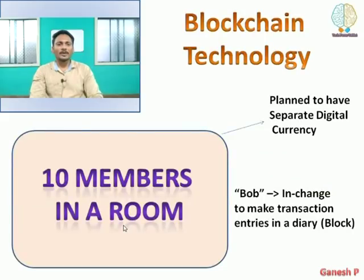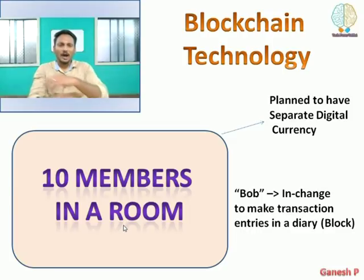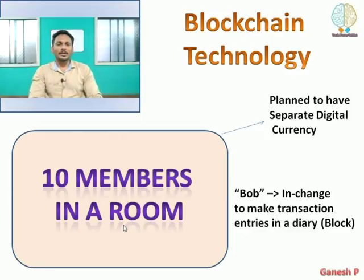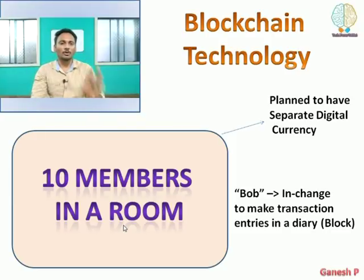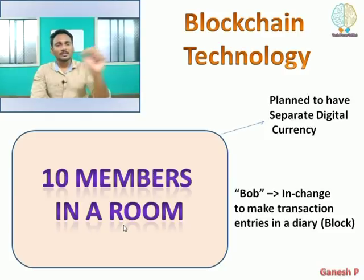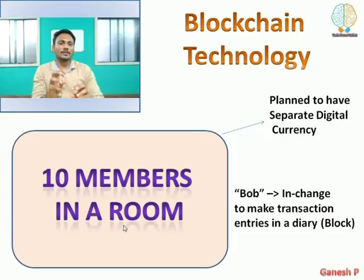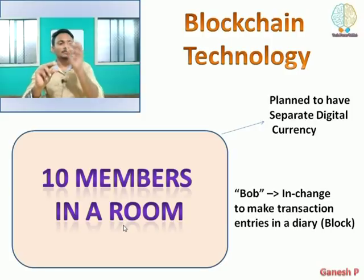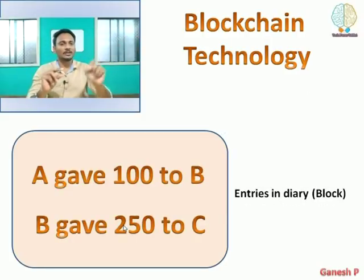In Blockchain, imagine a room with 10 persons creating a new digital currency. The problem is how to manage it. You choose a Bob — Bob is the person who keeps the record in a diary. That diary is essentially a block, and the block records transactions like Bob getting 100 units.